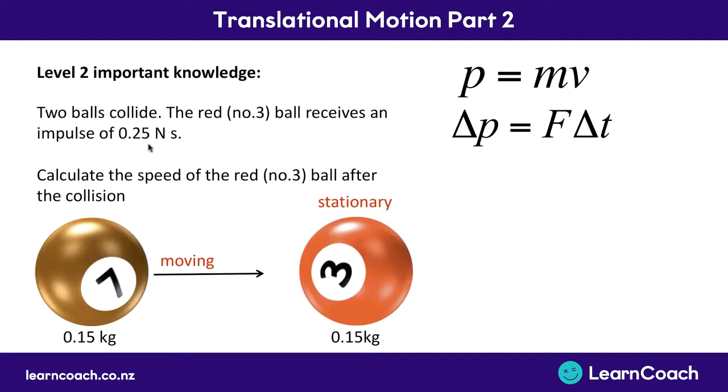They're both 150 grams or 0.15 kgs, and number seven is moving towards the stationary ball number three, and it says here there is an impulse which means a change in momentum of 0.25 newton seconds. Can we calculate how fast the stationary number three is going to move after number seven collides with it.